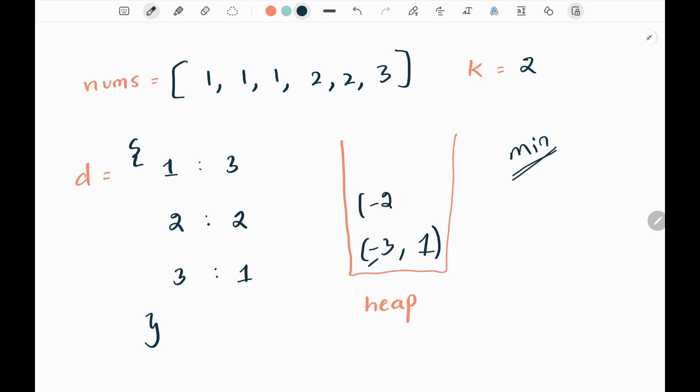Then I will append two and two. So the first element is the count and the second value is the element, the number. Then negative one and the value three.